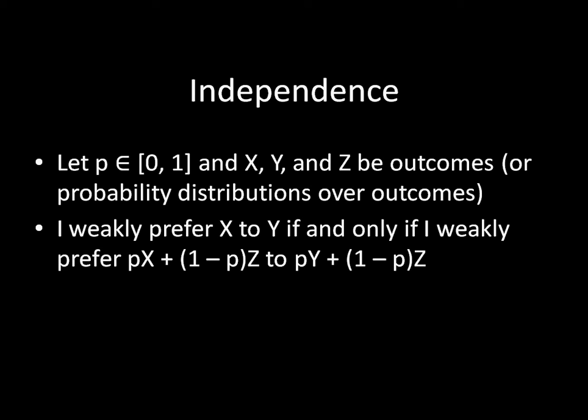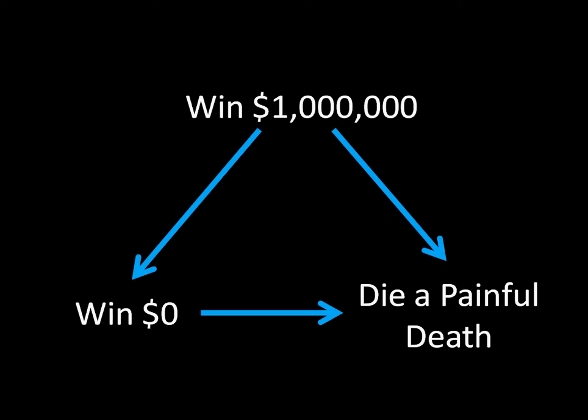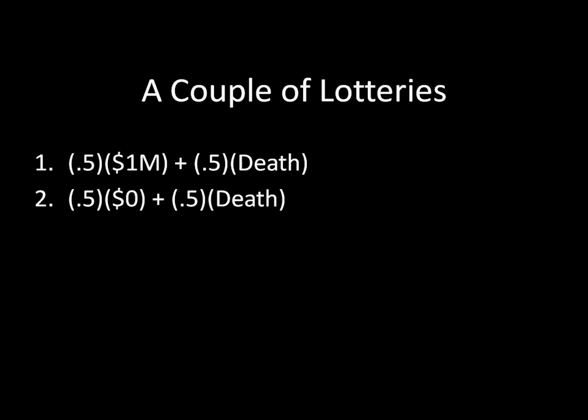That has a lot of notation and algebra, but if you see this in action, it will make a lot of sense. Let's think about your preferences as follows: you most like winning a million dollars, then you like winning zero dollars, and then you like dying a painful death. Notice that this is a rational preference — it's complete and transitive, and it's also the sensible preference ordering. But this deals with outcomes occurring with certainty. Independence is focusing on situations where there's uncertainty — where there are lotteries over these outcomes.